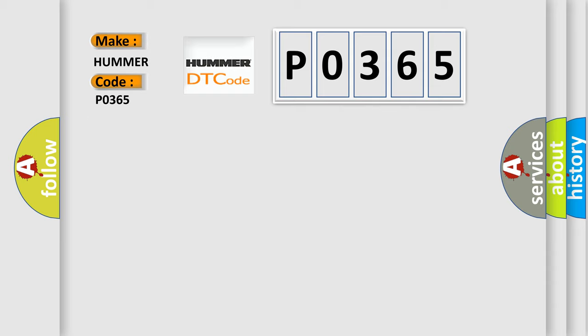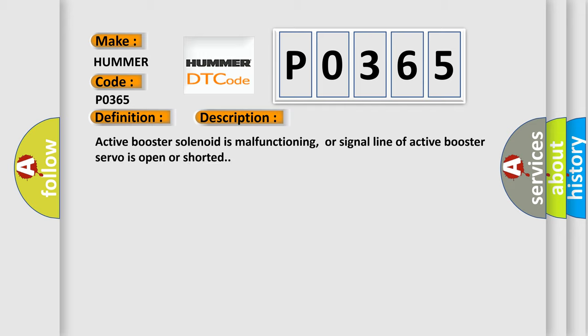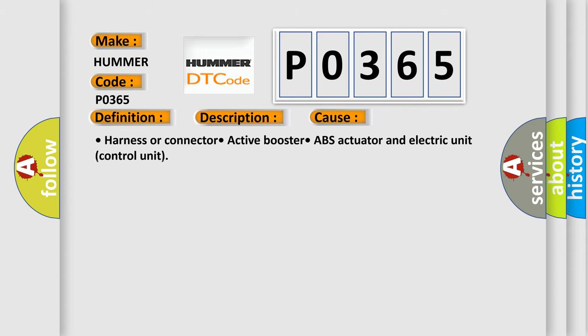The basic definition is ABS active booster. The active booster solenoid is malfunctioning, or the signal line of the active booster servo is open or shorted. This diagnostic error occurs most often due to a harness or connector fault involving the active booster, ABS actuator, and electric unit control unit.